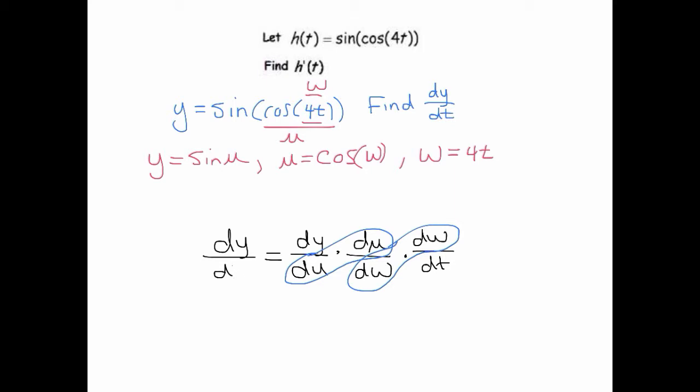All right now we're good to go. So we just need these derivatives. And dy/du is just cosine of u, du/dw is just negative sine of w, and dw/dt is just four.